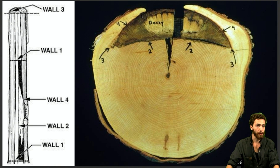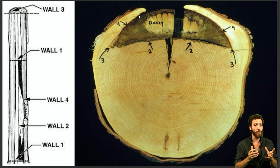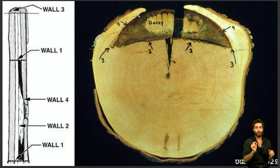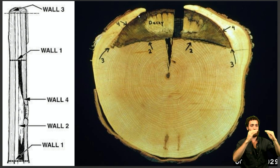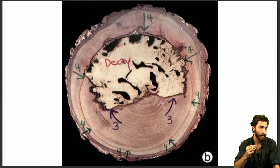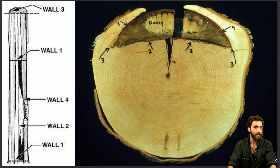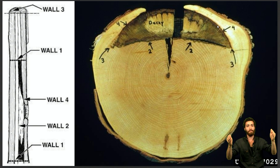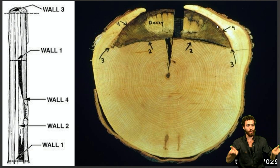Wall four is the strongest wall, also known as the barrier zone. Wall four prevents the radial movement of fungi from in to out. A crucial thing about wall four, in addition to it being the strongest wall, is that it is only produced the year of infection and can only be produced by the vascular cambium. So when wall four is produced, it's deployed from the vascular cambium on the very outside of the tree, walling off decay from getting outside of what will eventually be a sound wood sapwood shell.